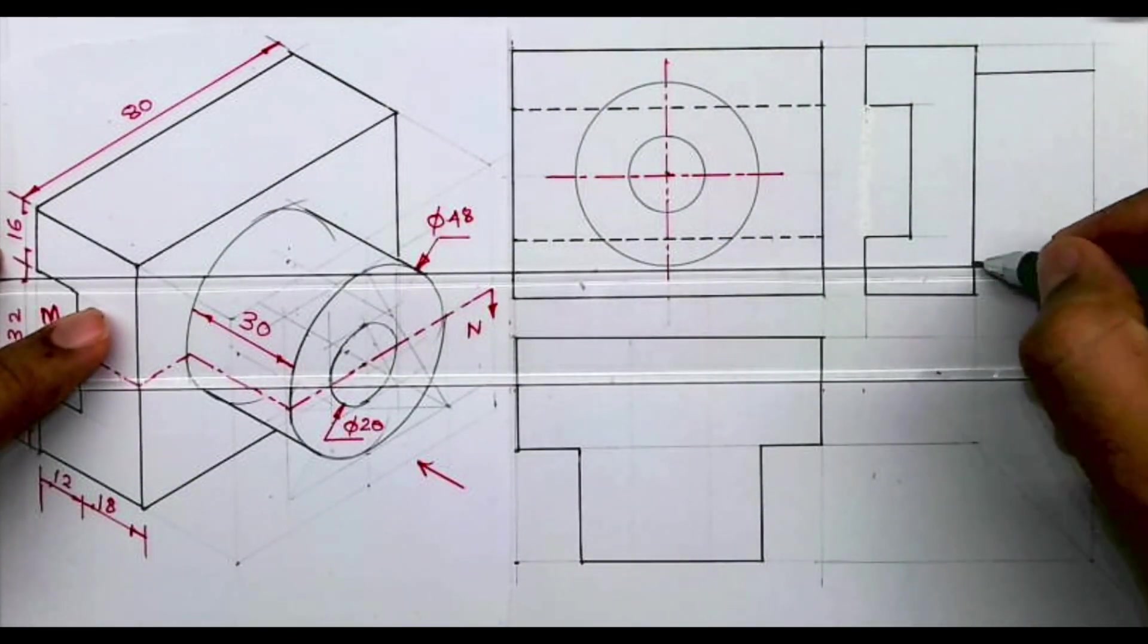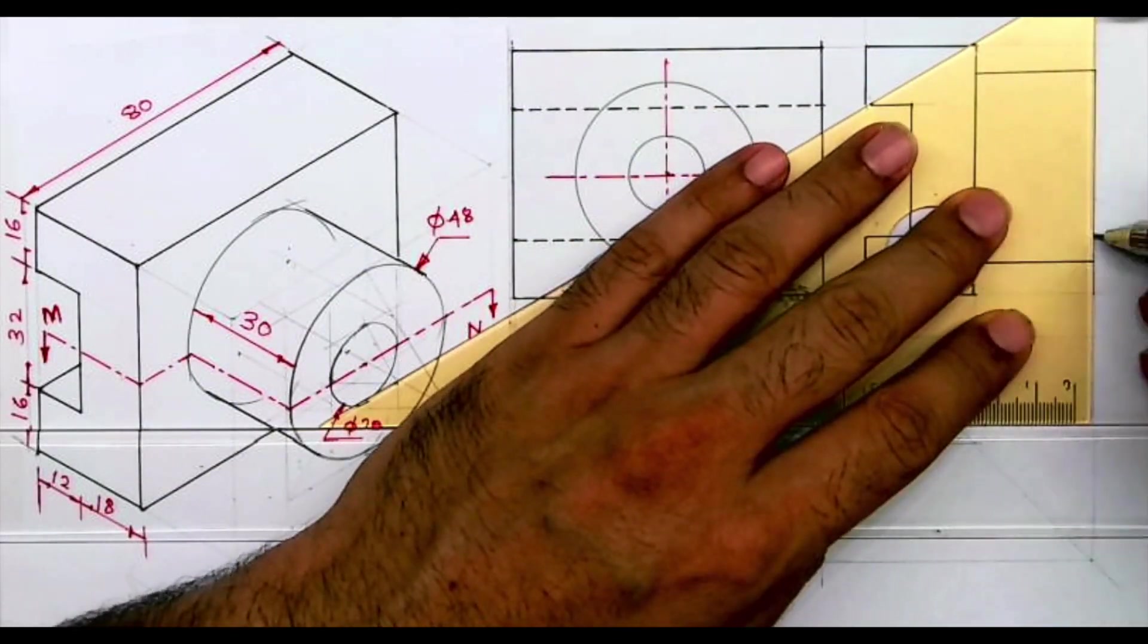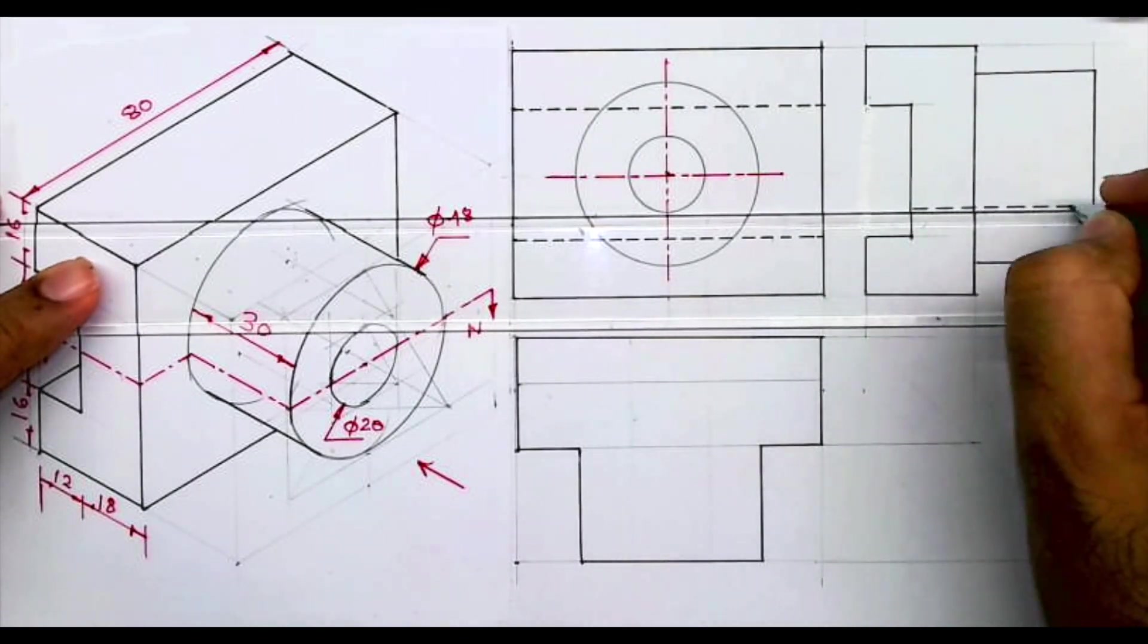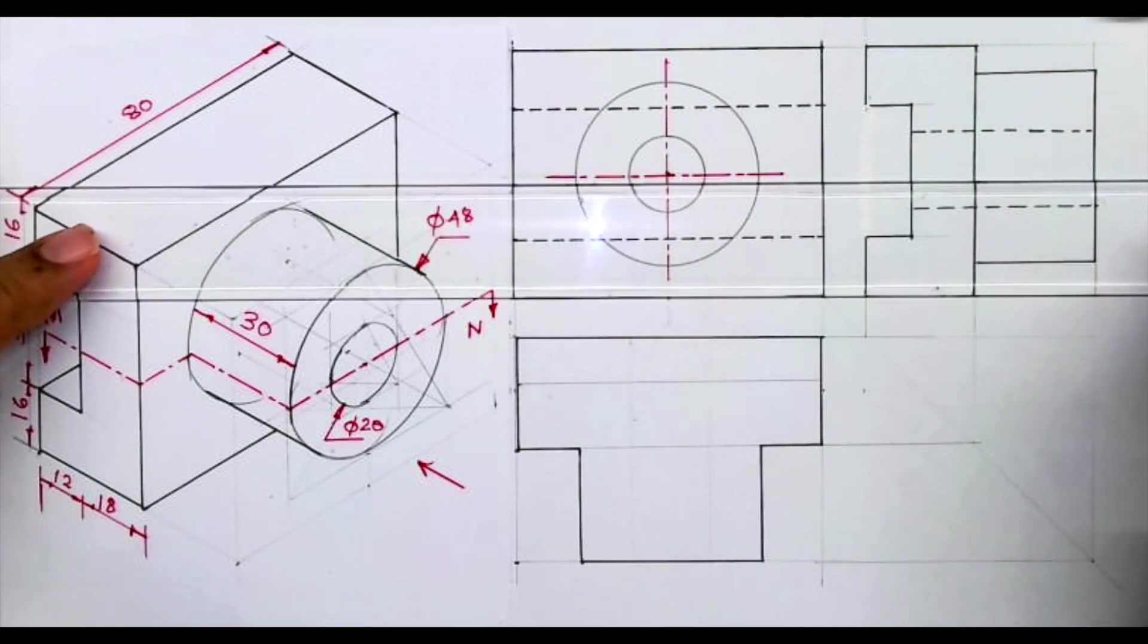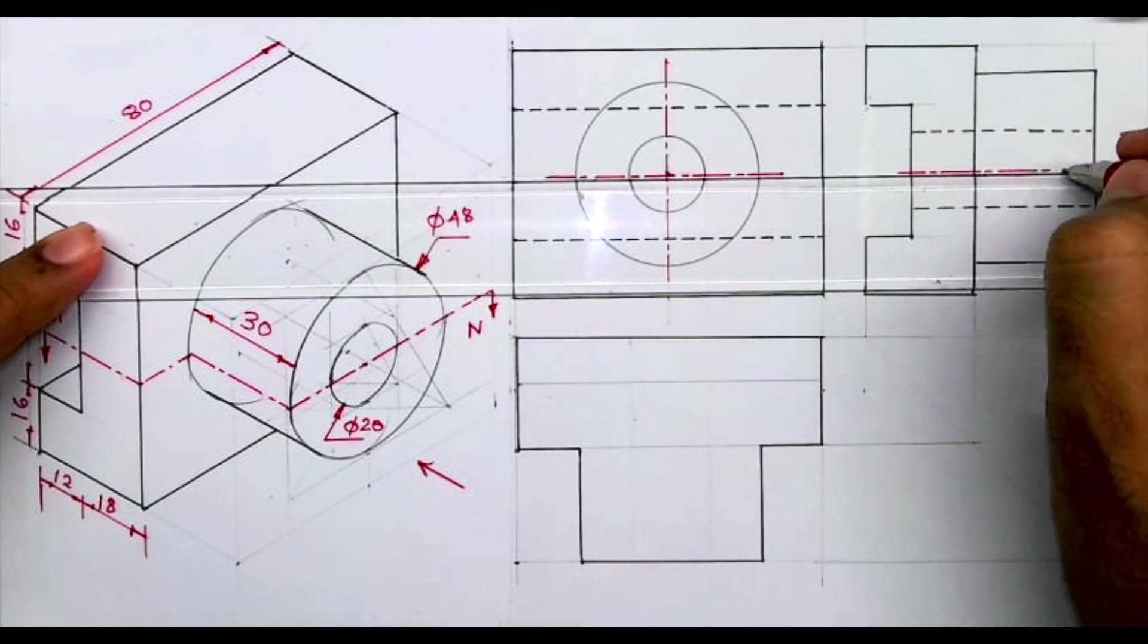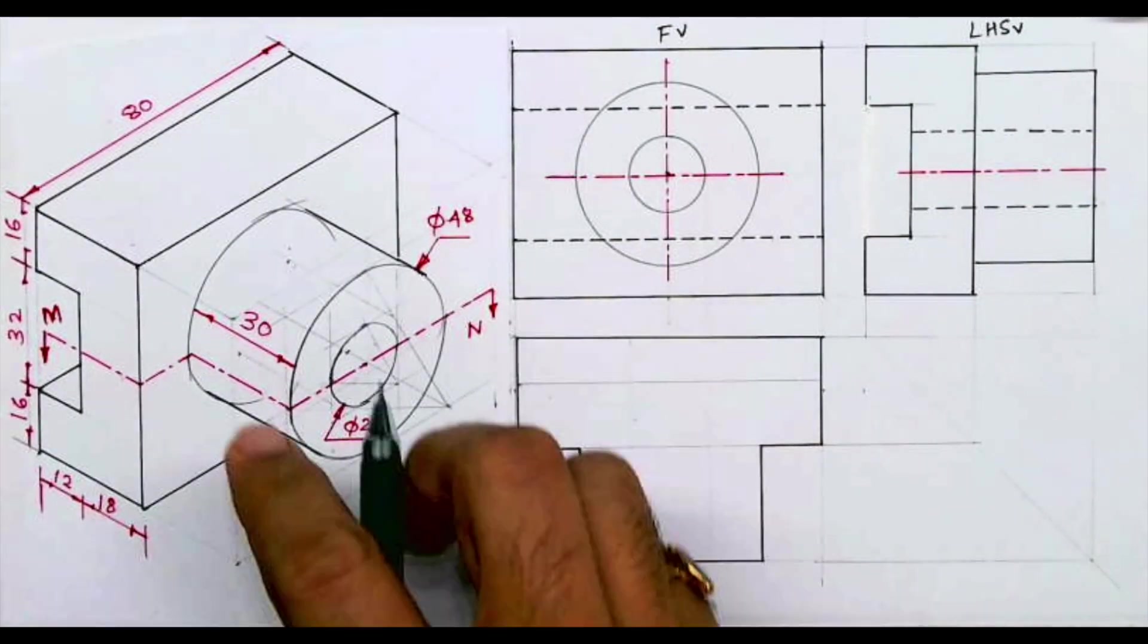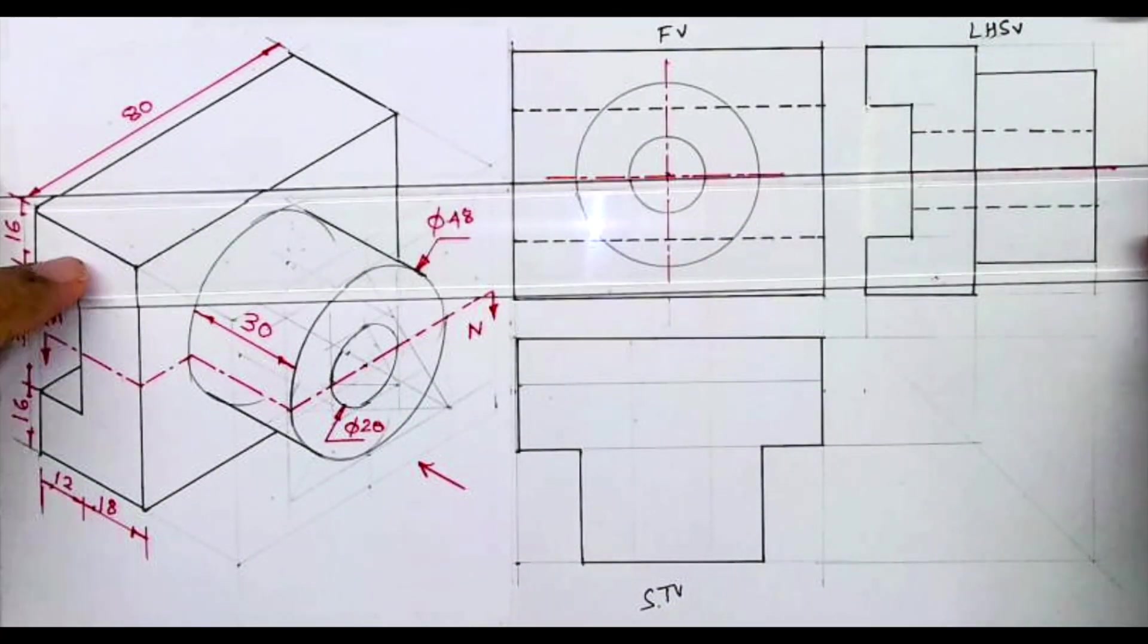Now what we will do we will draw dotted line. And this is axis, this is front view, this is left-hand side view. Now we need to draw top view and if you see this cut plane line, so after that cut plane line it will be sectional top view.